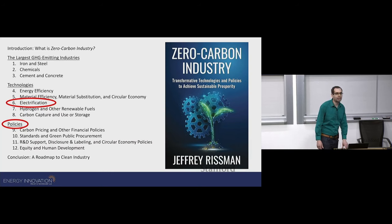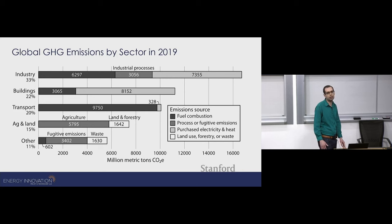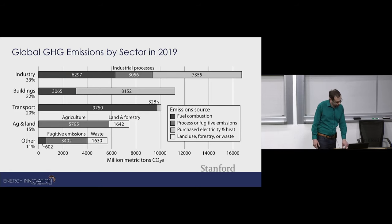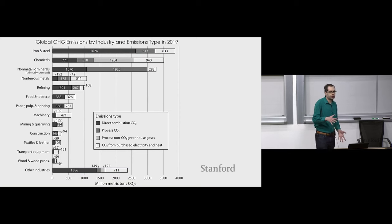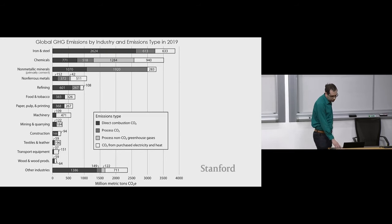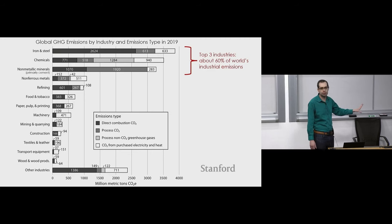This is an overview of global greenhouse gas emissions across multiple sectors. It shows that industry is about a third of human-caused greenhouse gas emissions, including emissions from electricity purchased by industry. If you exclude purchased electricity and make electricity its own sector, then industry is about a quarter of human greenhouse gas emissions. Either way, it's enormous and extremely important to address if we're going to meet any of our climate goals.